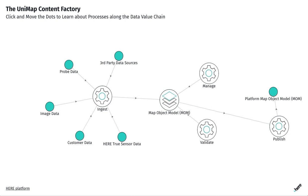First, Unimap is a content factory that allows for the creation of map making products. It replaces traditional map making approaches, enabling new source types to be processed and offering greater automation for faster turnaround times.